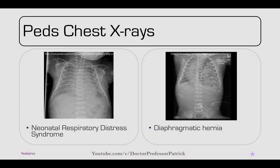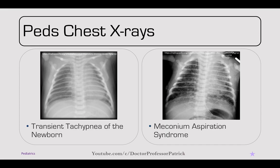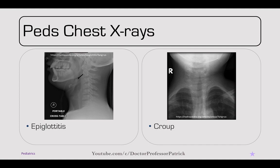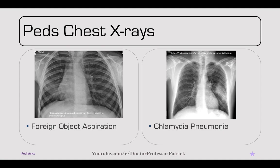Going over chest x-rays: a complete whiteout shows neonatal respiratory distress syndrome. Next, a diaphragmatic hernia with bowel herniated within the left hemidiaphragm. Transient tachypnea of the newborn shows fluid within the fissure lines. Meconium aspiration syndrome shows patchy infiltrate throughout. Epiglottitis shows the thumbprint sign; croup shows the steeple sign. Foreign body aspiration shows decreased lung markings on one side. Chlamydial pneumonia shows hyperinflation and interstitial lobar infiltrates. That's it for the cardiac, pulmonary, and immunodeficiencies chapter. Next, we'll move through GI and other organ systems for part two.